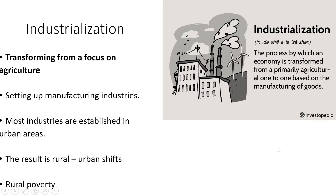But first of all, let's look at Industrialization. Industrialization ideally means transformation from a focus on agriculture — an economy moves away from focusing on agriculture and sets up manufacturing industries, processing raw materials, adding value. Most industries are established in urban areas.